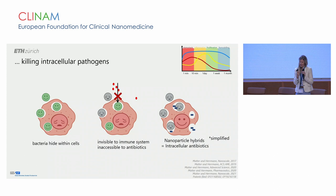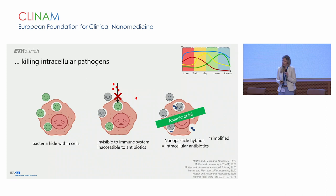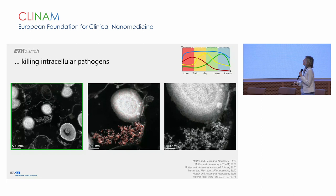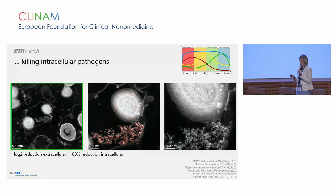We fed a particle suspension to human monocyte-derived macrophages with the hypothesis that these particles would co-localize with bacteria and kill them. Under transmission electron microscopy, we can see bacteria — in this case staph — hiding within human monocyte-derived macrophages. Bacteria with intact membranes show a bright outer membrane, but when particles are next to these bacteria, the membranes are damaged and the bacteria are dead. We can quantify a log-2 reduction of extracellular bacteria and over 60% reduction of intracellular bacteria.